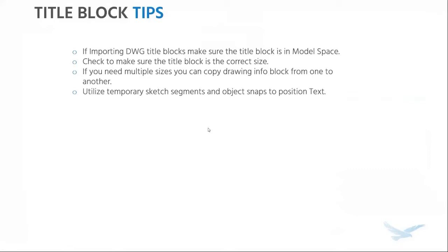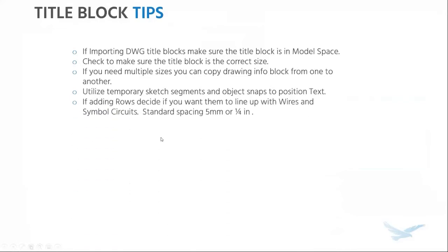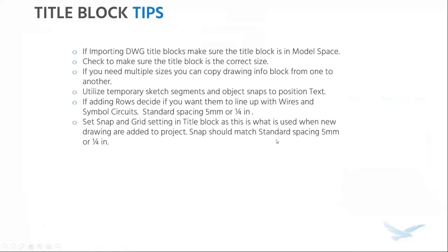Utilize temporary sketch segments and object snaps to position your text. I use this tremendously when setting up title blocks — if I need to center text in a box, I draw a diagonal line across it, use my midpoint snap, and then delete that diagonal line. Also, if adding rows, decide whether you want them to line up with your wires and symbols. Remember, the standard snap spacing for multi-circuit symbols is five millimeters or a quarter inch.